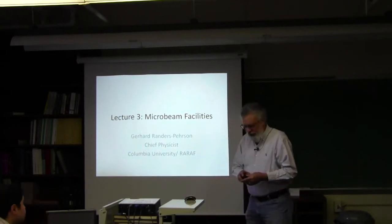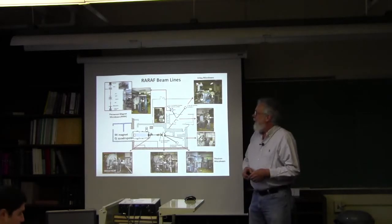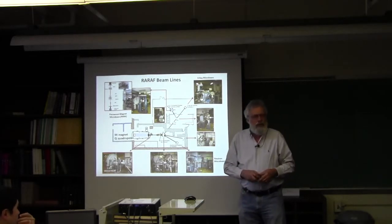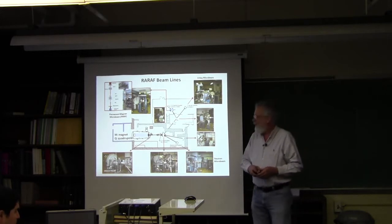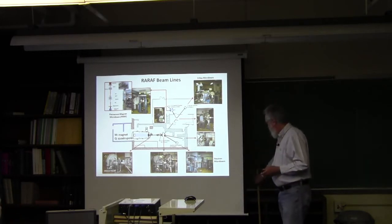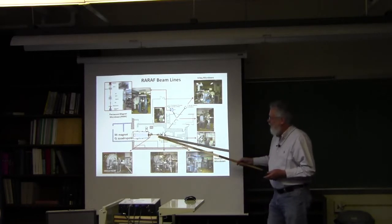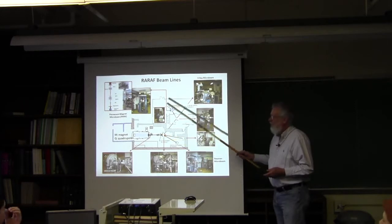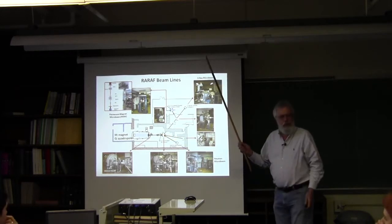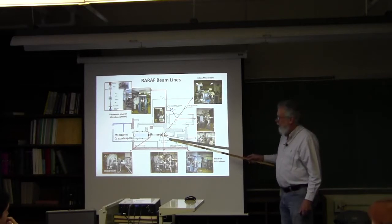This is a schematic or map of the rare app facility. The accelerator beam comes out, there's a magnet here called M1 that takes the beam upstairs for our main microbeam station. There's a switching magnet which puts the beam into various other beam lines.